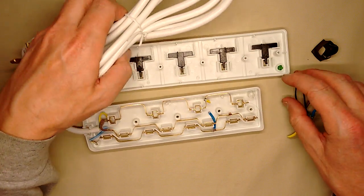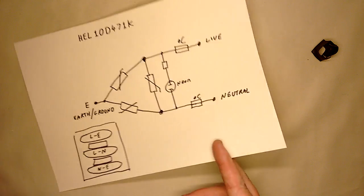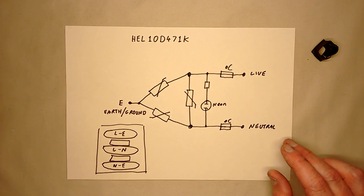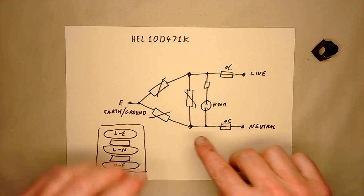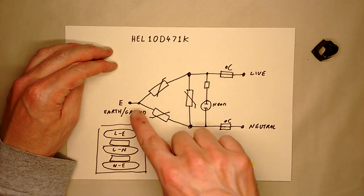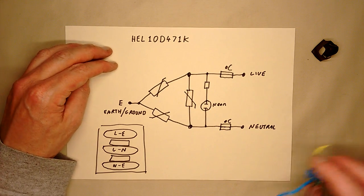If we look at the schematic for this, you can see there are the three metal oxide varistors and they're between live, neutral, and earth. However, on each of the live and neutral we have the two thermal fuses sandwiched between the metal oxide varistors.